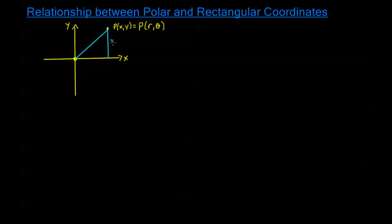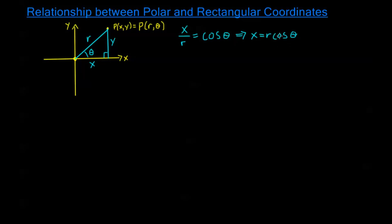The right side of this triangle is my y value, the base is my x value, and this is a right triangle. The angle at the origin is θ in polar form, and the hypotenuse is r in polar form. Using SOH CAH TOA, x over r equals cosine of θ, which means x equals r·cos θ. Similarly, y over r equals sine θ, giving us y equals r·sin θ.